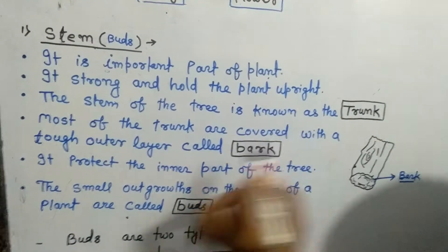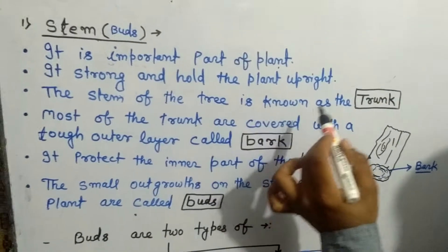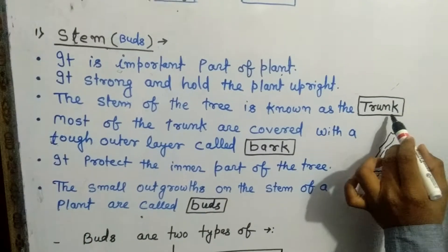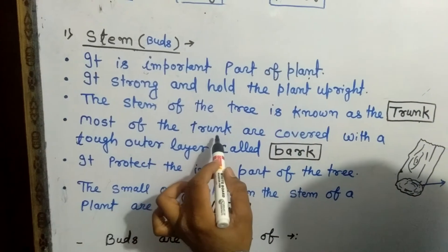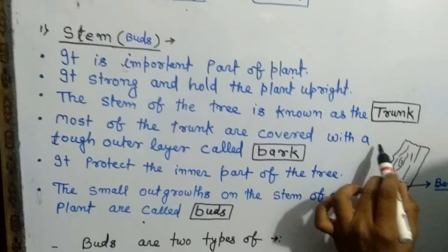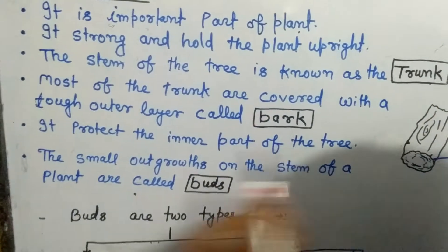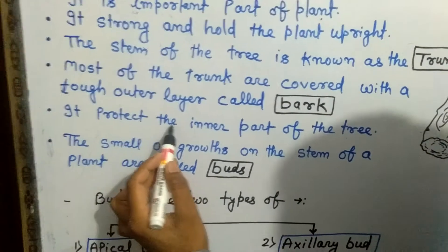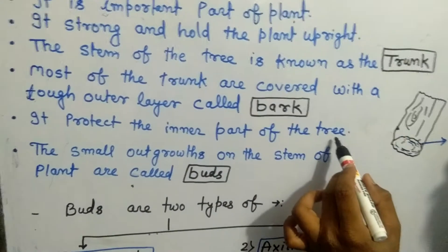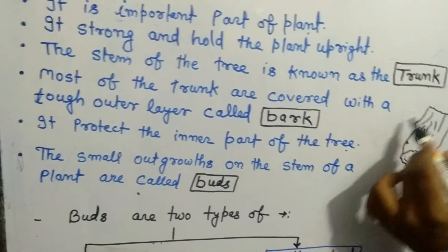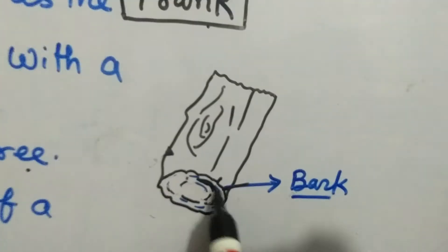The stem of a tree is known as the trunk. Most trunks are covered with a tough outer layer called bark. The bark protects the inner part of the tree. Here you can see this is a bark.